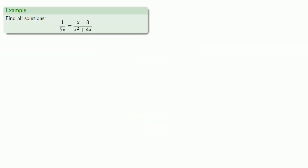So let's try to find all solutions to the equation 1 over 5x equals x minus 8 over x squared plus 4x.